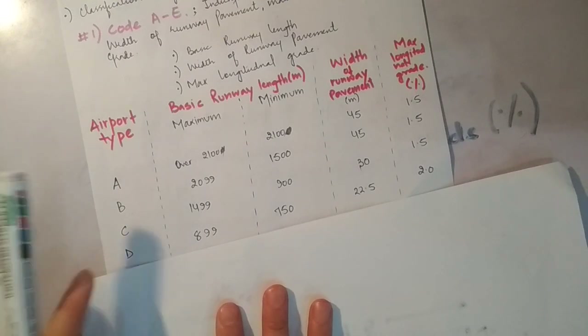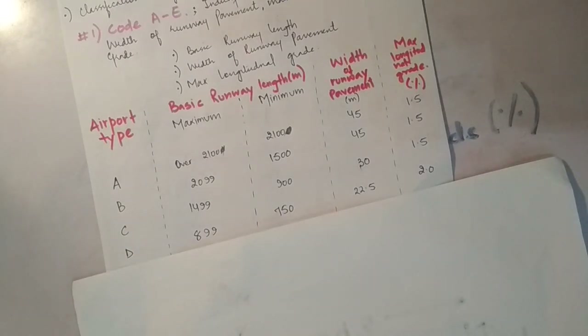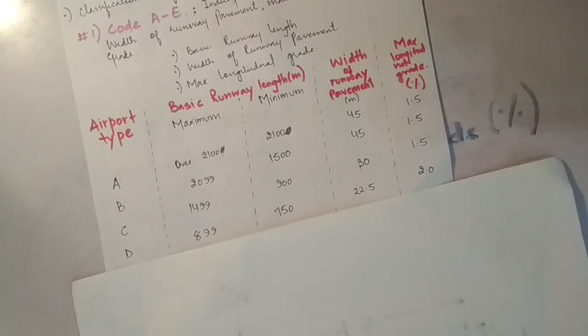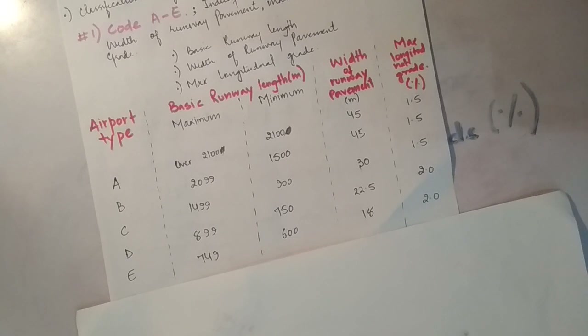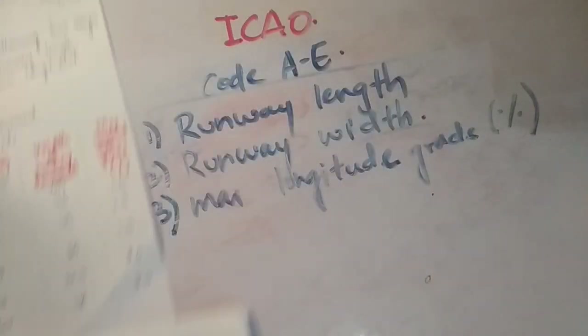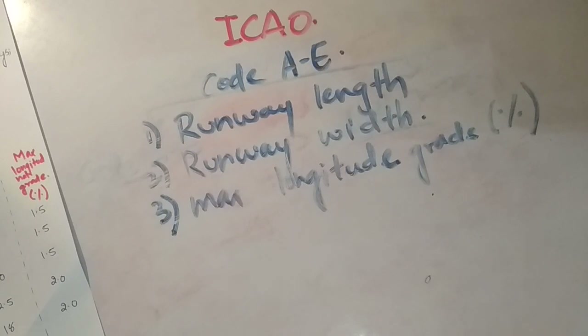Type D airport में length of the runway 750 to 899 meters में span करती है, width of pavement 22.5 meters है, और maximum longitudinal grade 2.0% है। Type E airport में runway length 600 to 749 meters है, width of runway pavement 18 meters है, और maximum longitudinal grade 2% है। एक trend हम देखेंगे — exam में यह कैसे याद कर सकते हो?